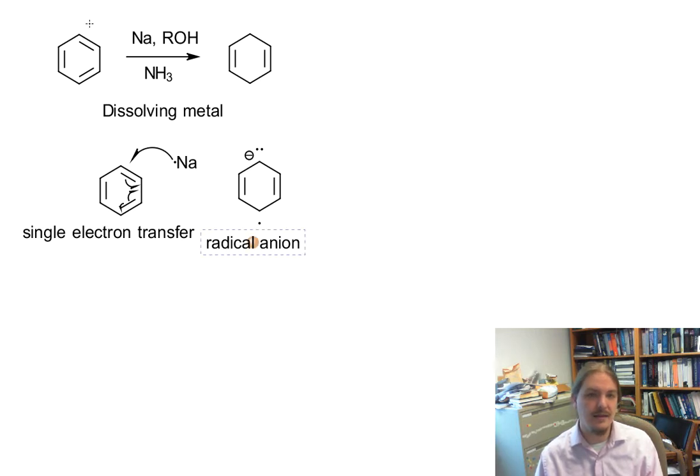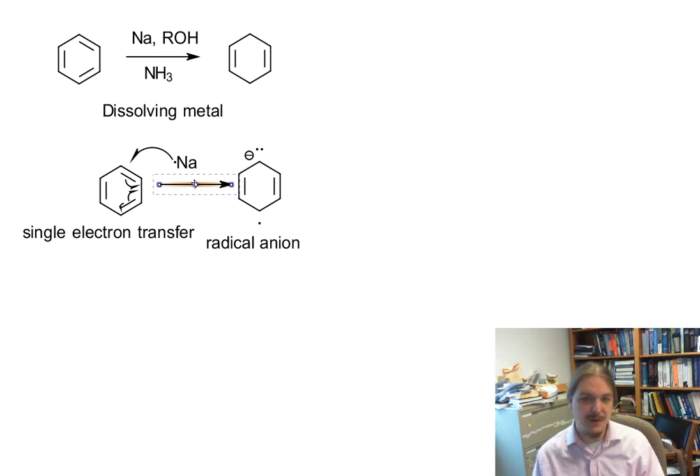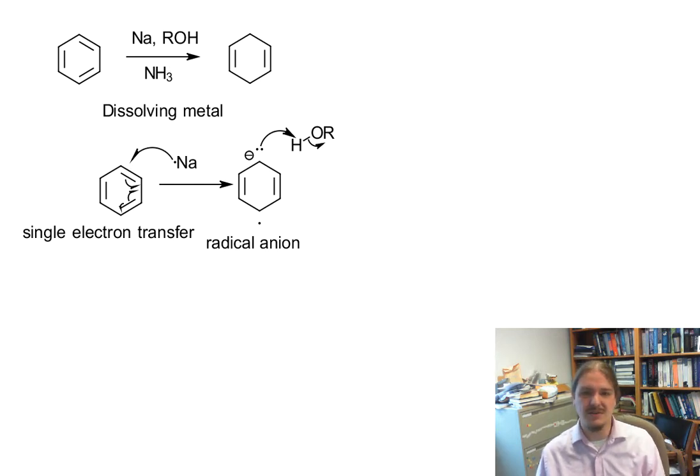And then that radical anion picks up a proton from our alcohol. Common alcohols include methanol, tert-butyl alcohol, generally a number of alcohols here. Tert-butyl alcohol is actually a common alcohol used because it reacts slowly with sodium. You might know that sodium reacts with alcohols as well.